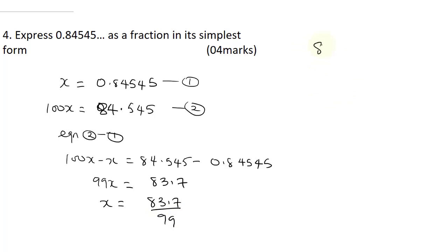So, this would be times 10 times 10. This is going to give me 837 over 990. Now, what can divide across both? I think 9 can go for both equations. So, when you reduce this, 9 into 837 is going to be 93, and 9 into 990 is going to give us 110. So, our final answer is 837 over 99.